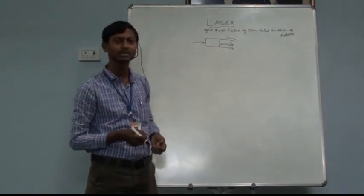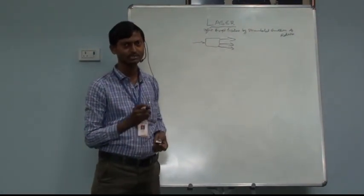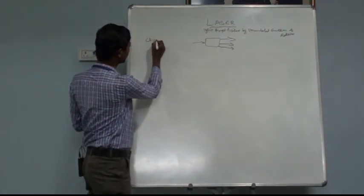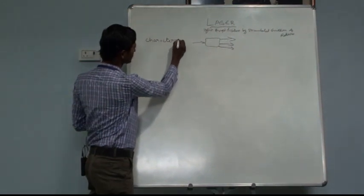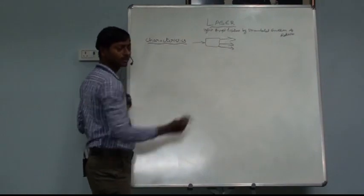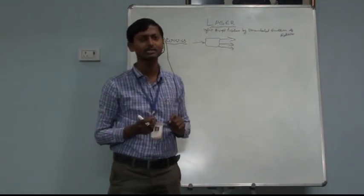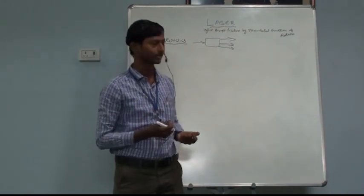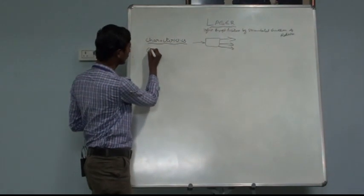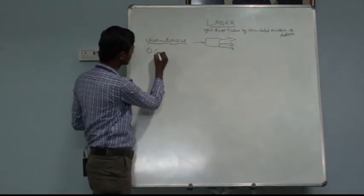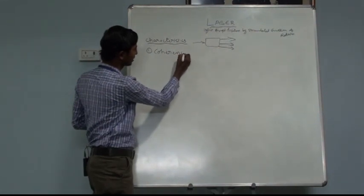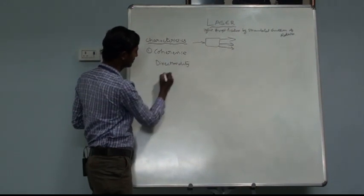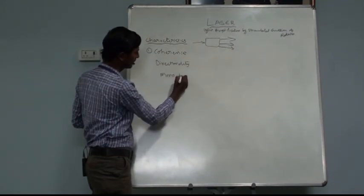Now let us take some of the important properties a laser light should have. Generally laser light has four important characteristics. The first one is called coherence, the second is called directionality, the third is called monochromaticity, and the fourth is called high intensity.